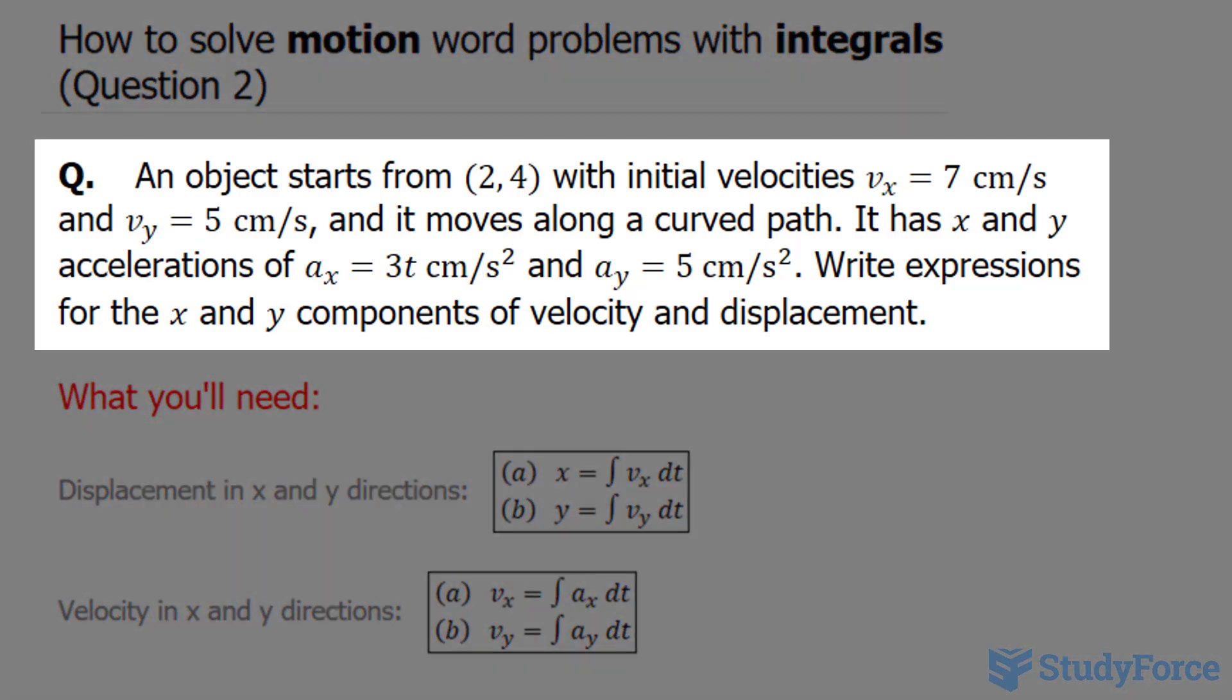The question reads, an object starts at the point (2, 4) with initial velocity v_x equals 7 cm per second, and v_y equals 5 cm per second.